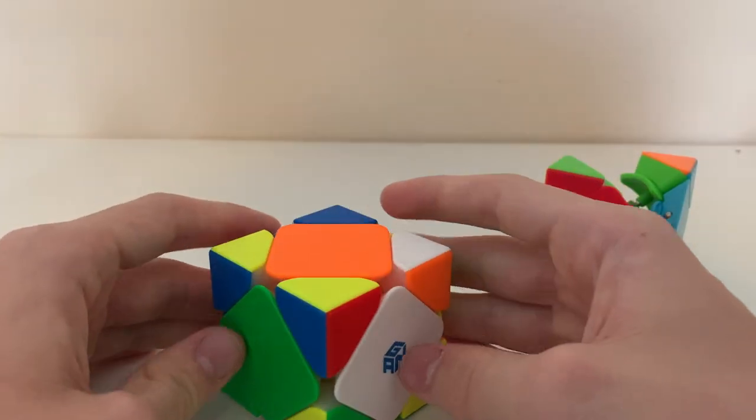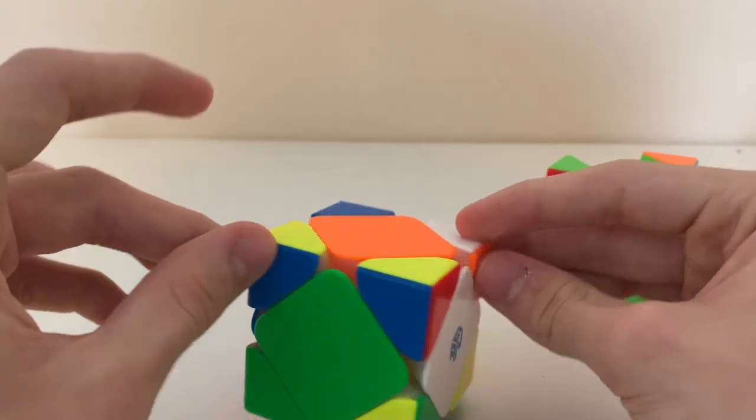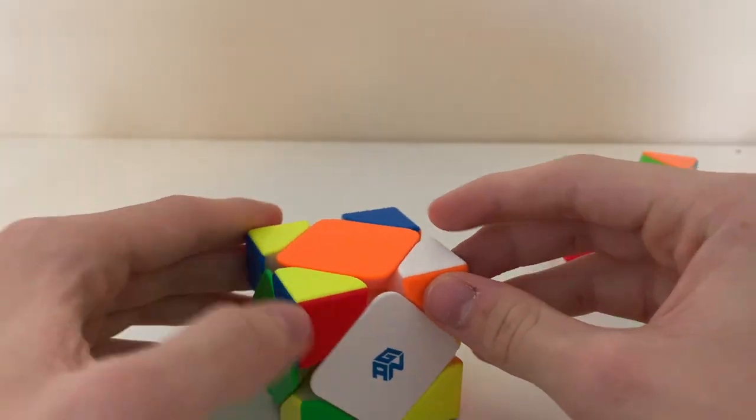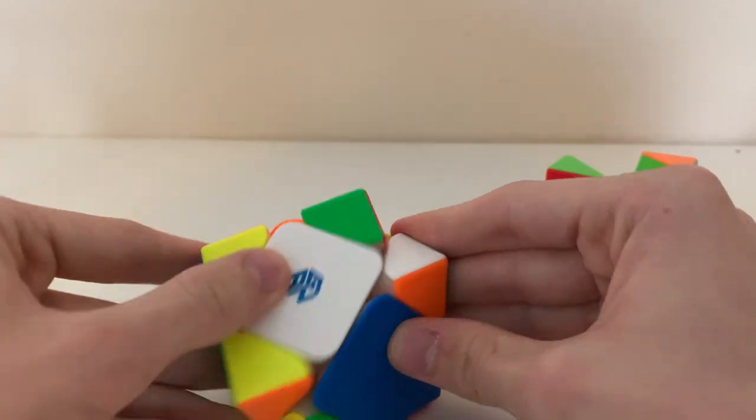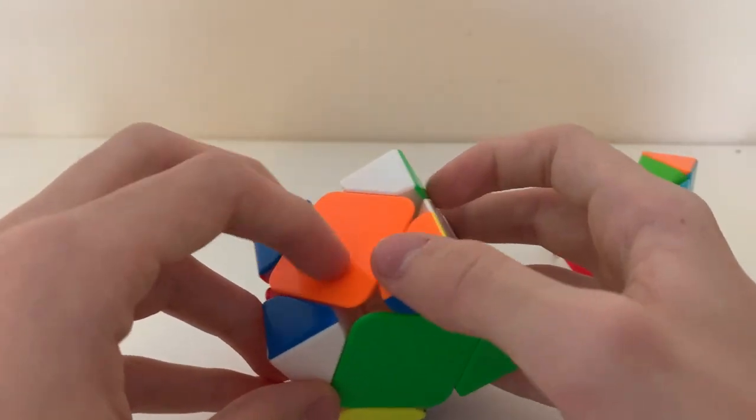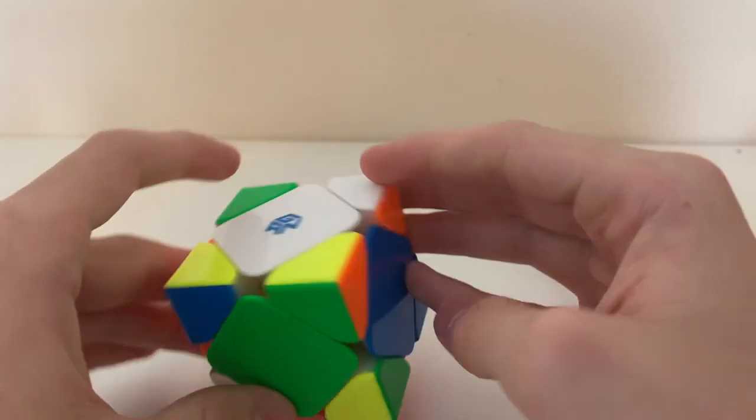So here we have our bar on the bottom, and these two corners both need adjacent centers. So here we can put the white next to here by doing that. And we already skipped the orange one here.